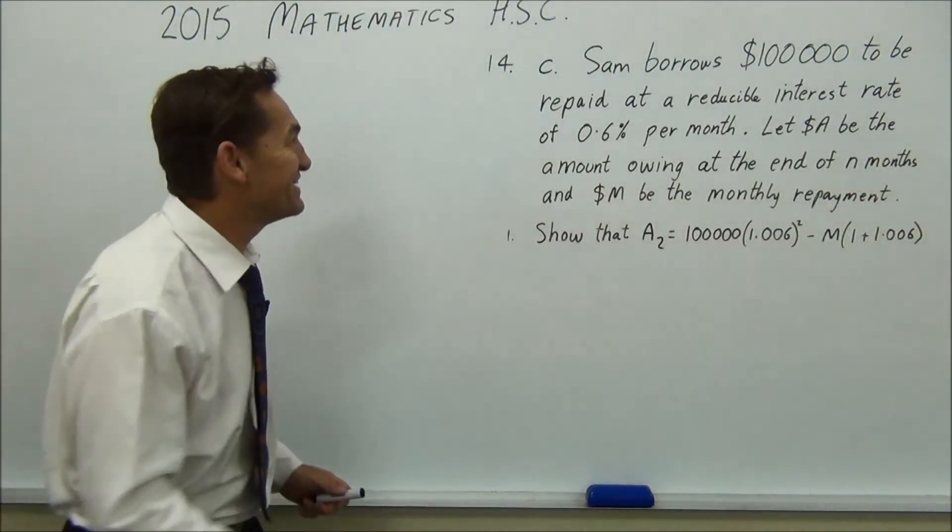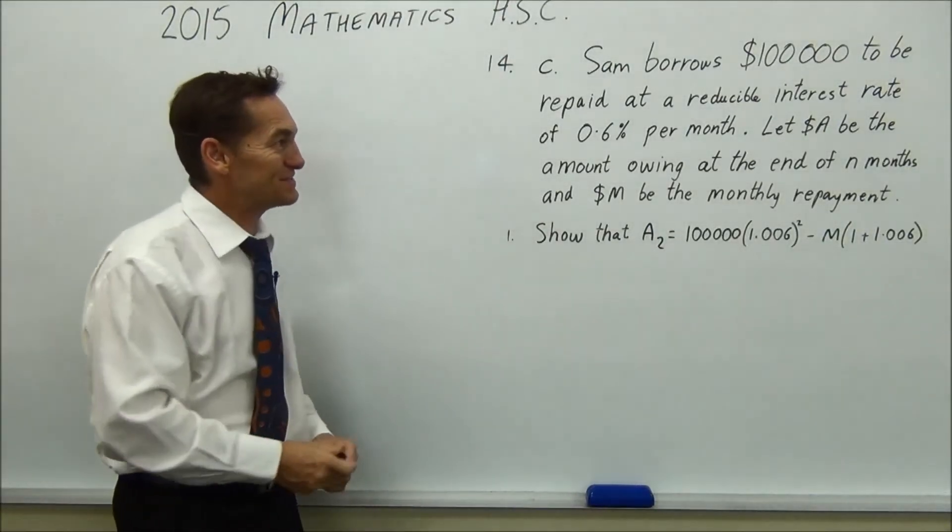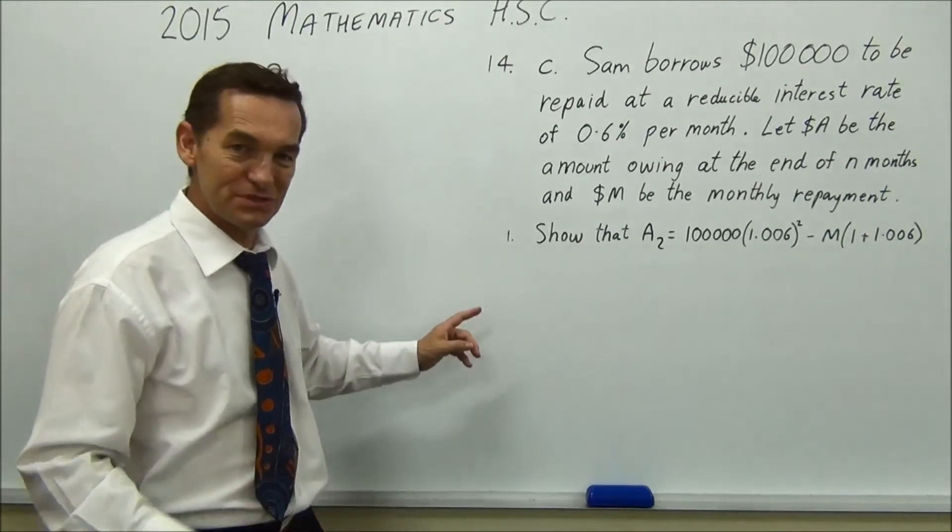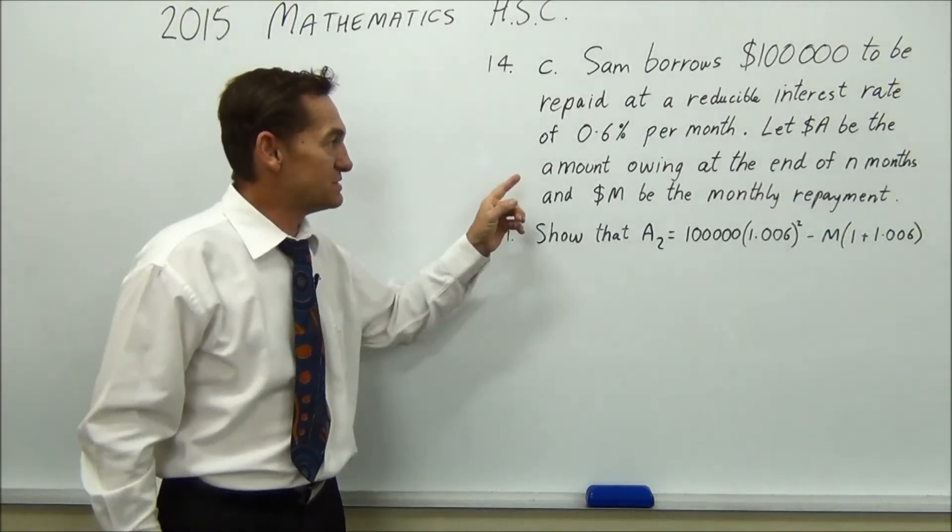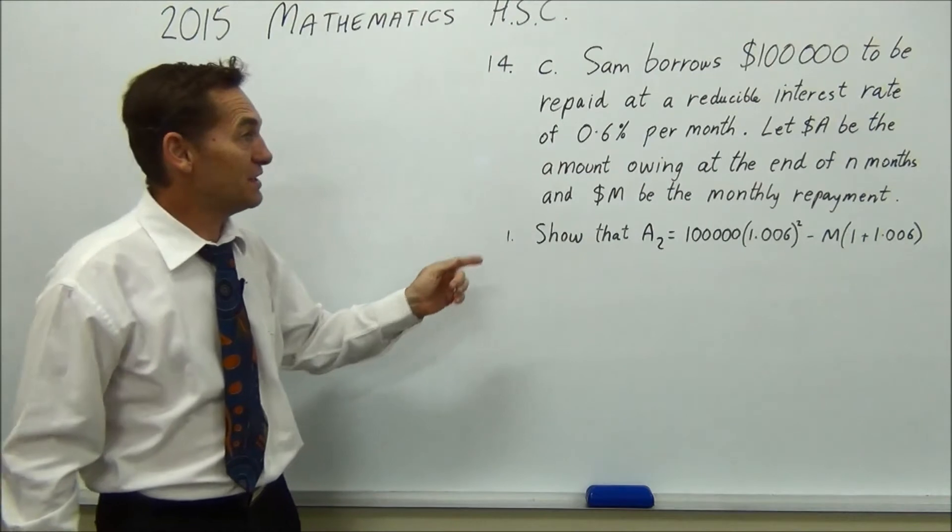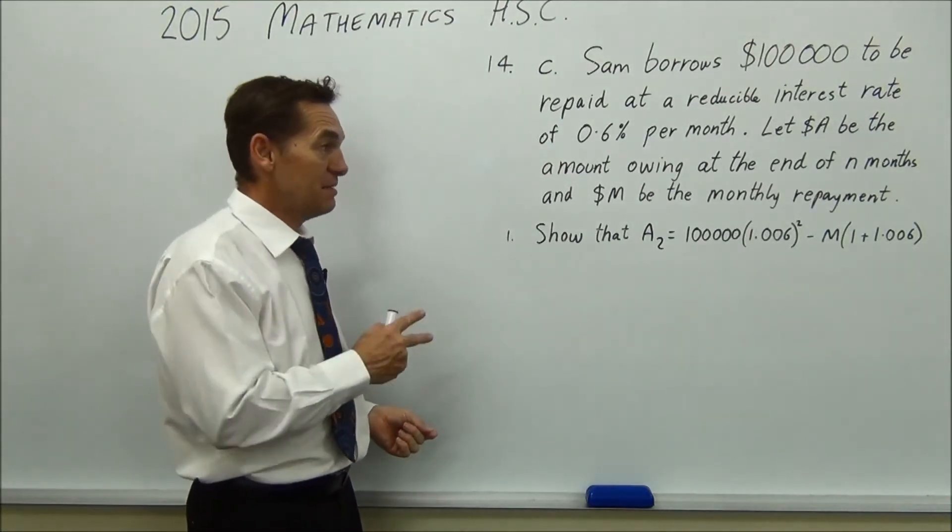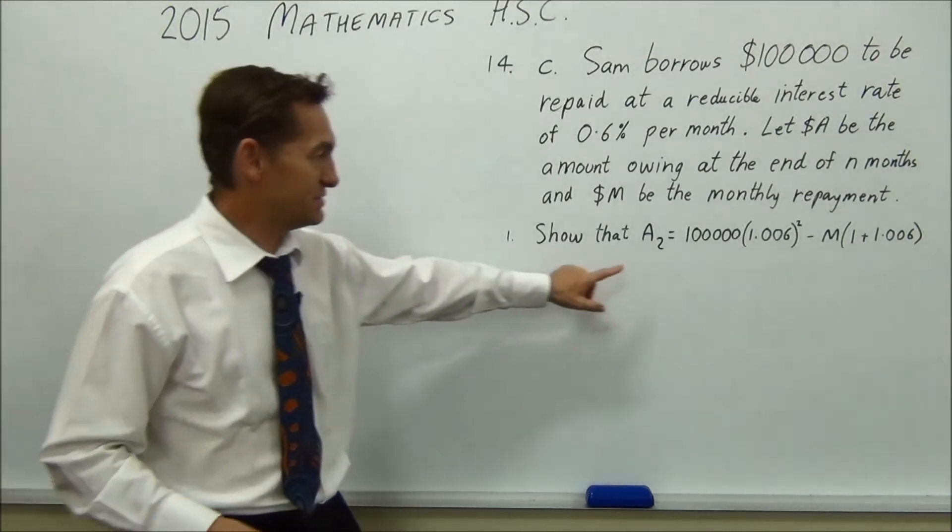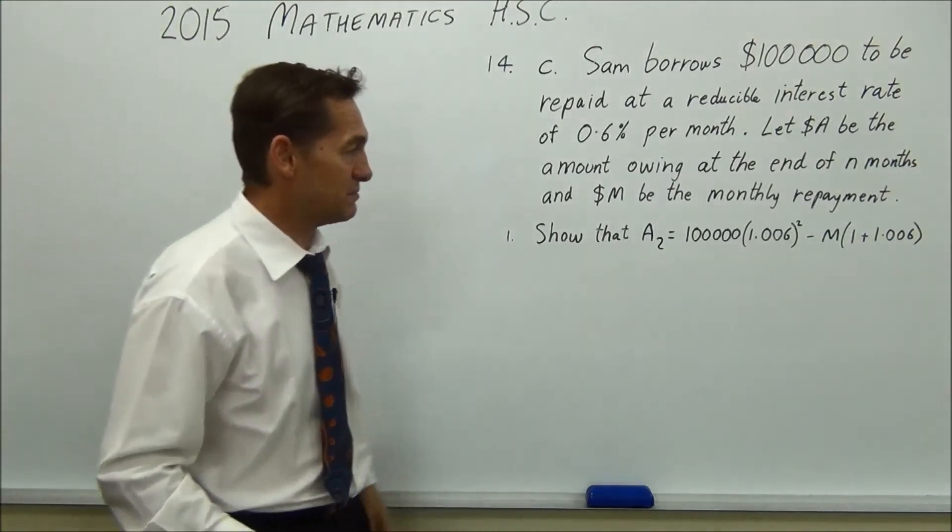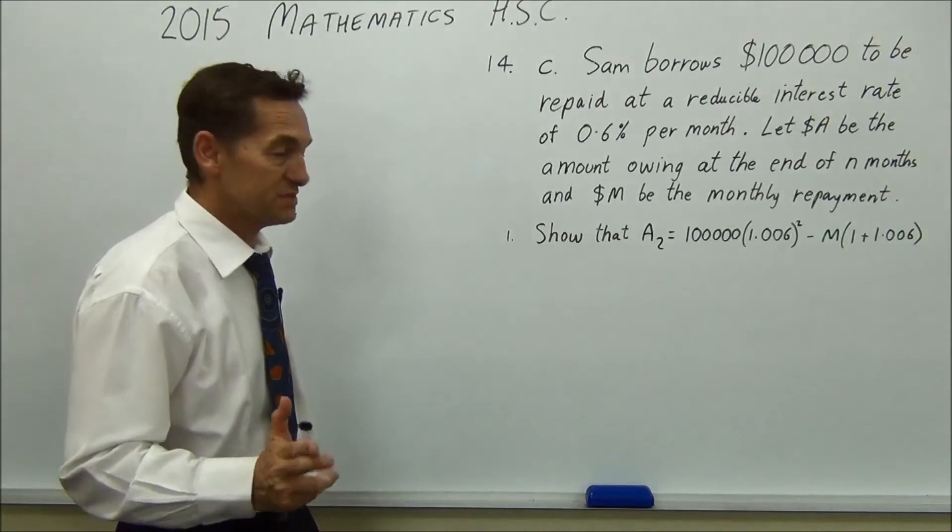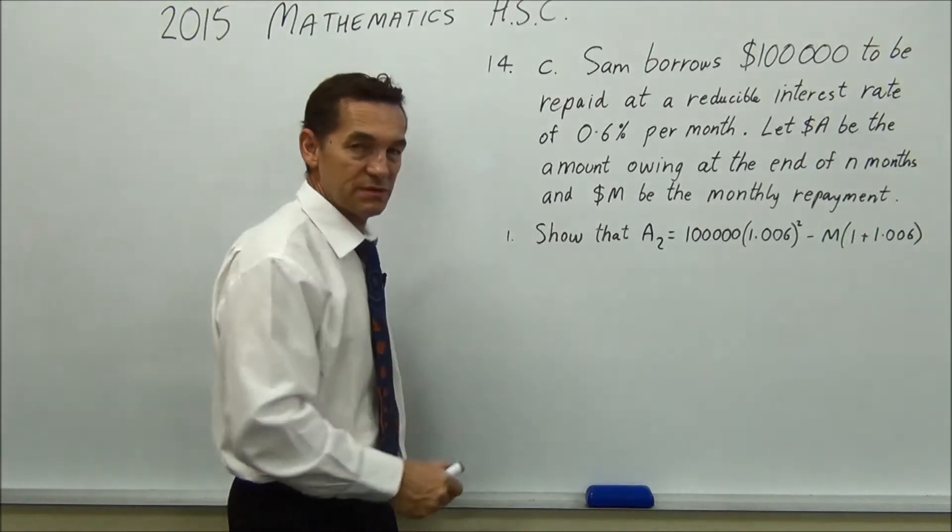G'day again, 14C. Sam borrows $100,000 to be repaid at a reducible interest rate of 0.6% per month. Let A dollars be the amount owing at the end of N months, and M dollars be the monthly repayment. Show that A2 equals 100,000 times 1.006 squared, minus M times 1 plus 1.006.